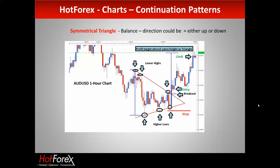Let me talk through the symmetrical triangle once more. We need a supply line and a demand line touching two or three times at least. The triangle was nearly complete — the third touch at the bottom had just occurred, and the breakout happened on the very next candle. We identified the triangle, got our target from the base, we're looking for a breakout either way. We get in around about here after retracing on the first breakout.